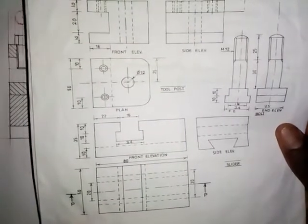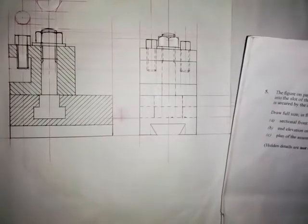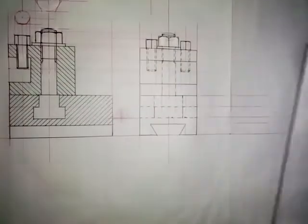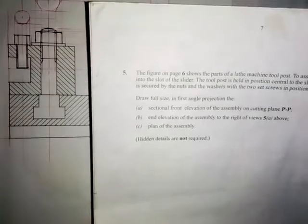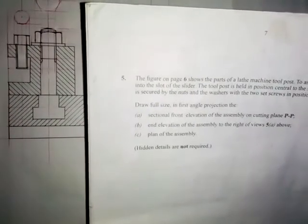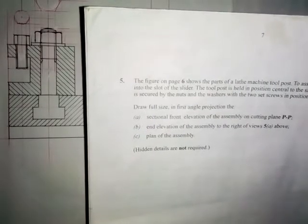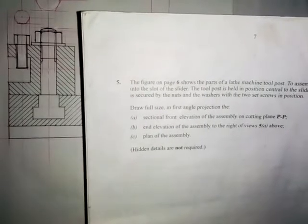Here we want to solve Part 3 of this mechanical drawing — Question C. We have done Part 1, which is Question A: drawing the sectional front elevation of the assembly on cutting plane PP. We have also done Question B as Part 2: drawing the end elevation of the assembly to the right. Now for Part 3, Question C, we should draw the plan of the assembly.